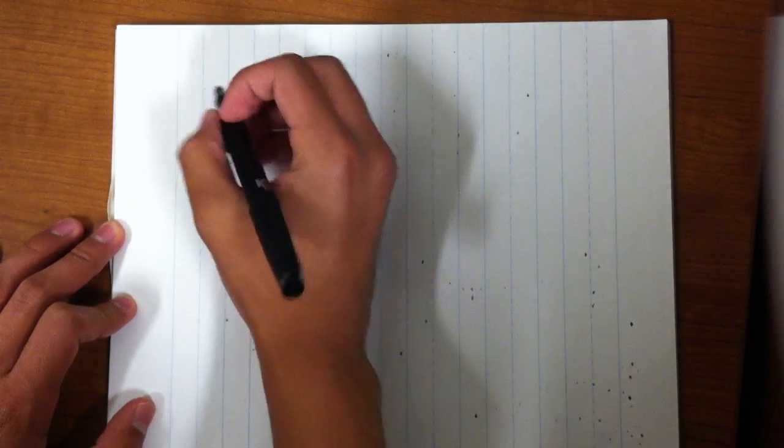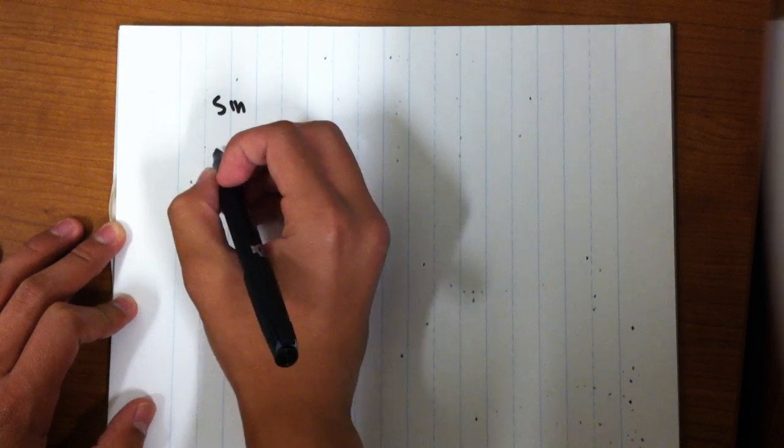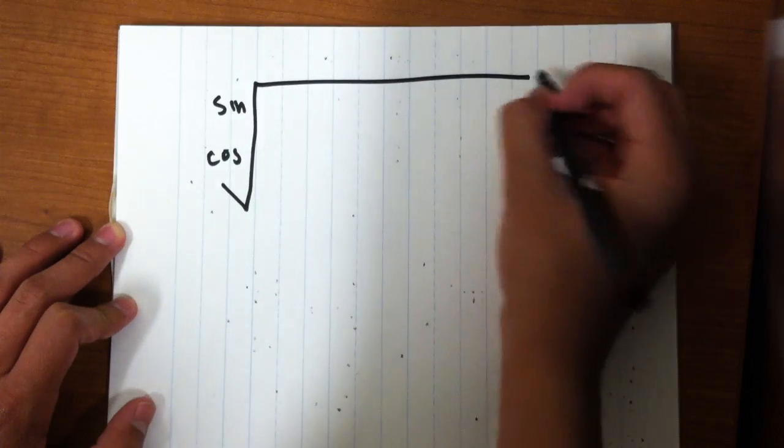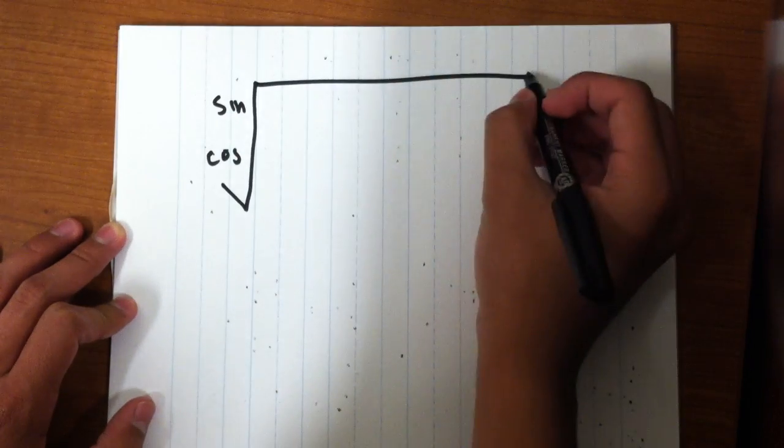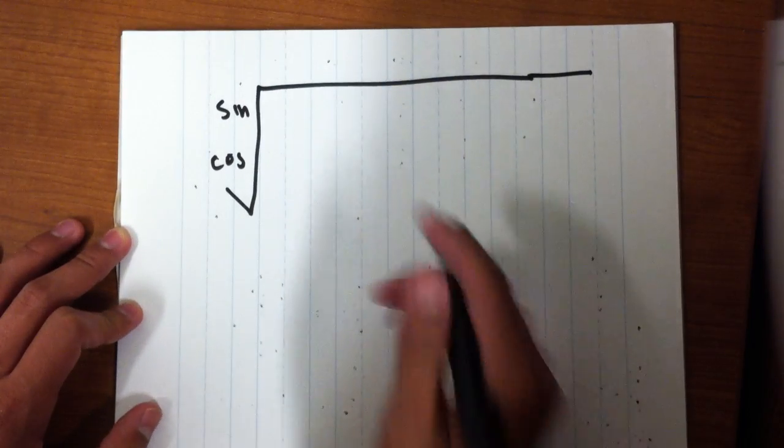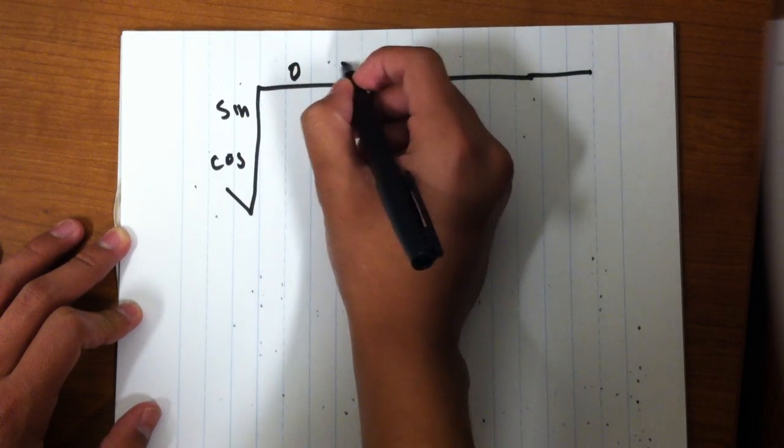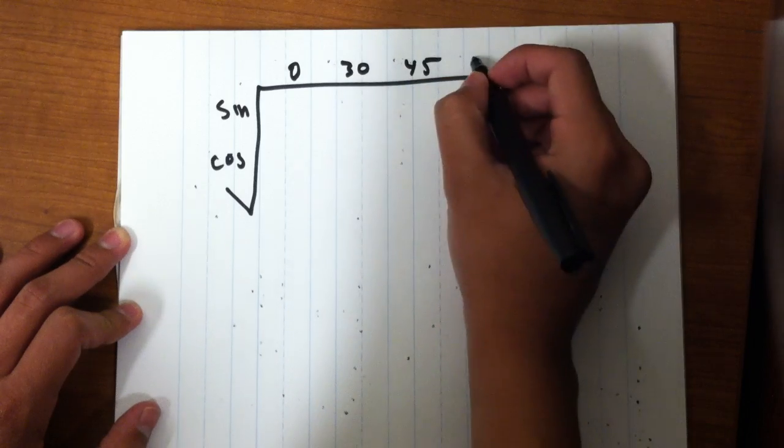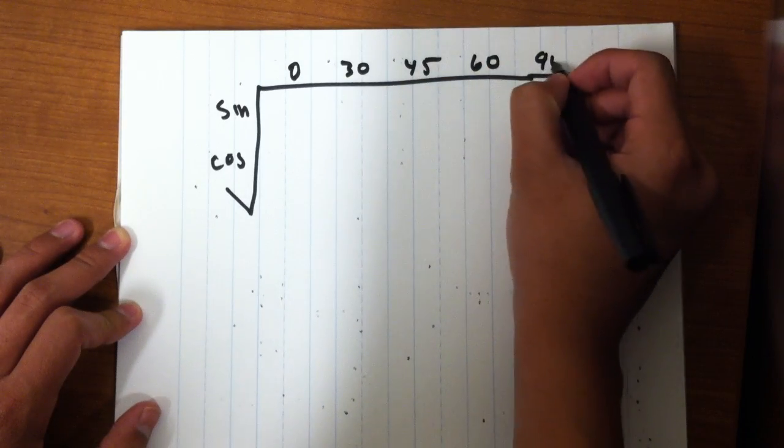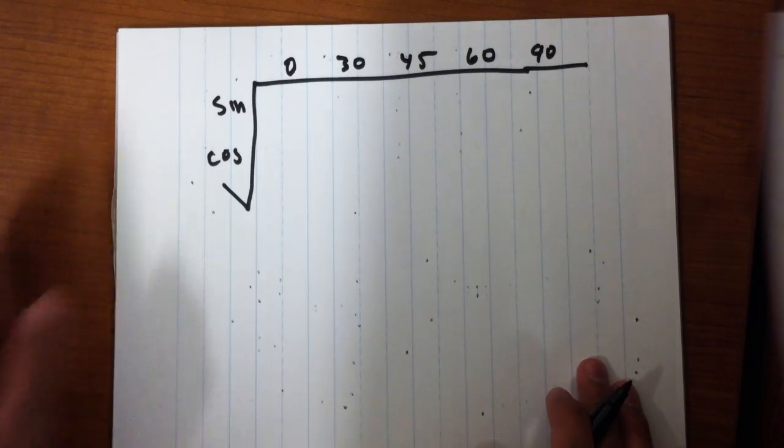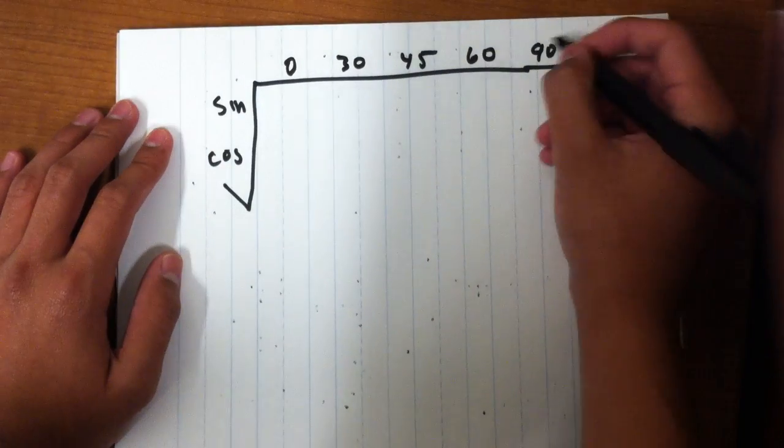So basically the chart is like this. You start off with sine and then right below cosine. Then you do a giant square root and you put the most commonly used values in trig for these functions. It should be 0, 30, 45, 60, and 90. This is going to teach you how to find the exact values without having to memorize anything. And these are degrees of course.